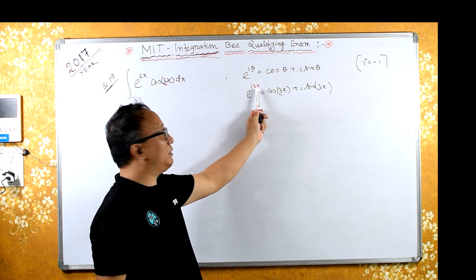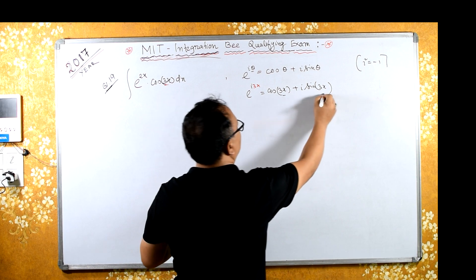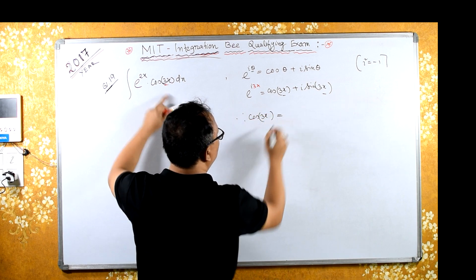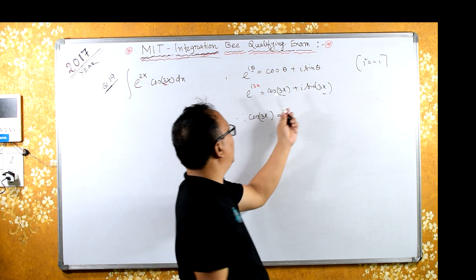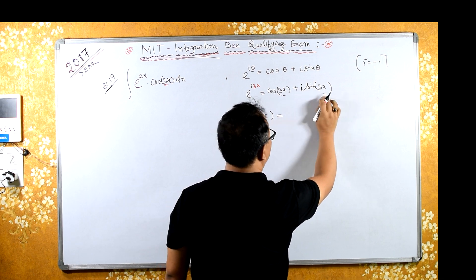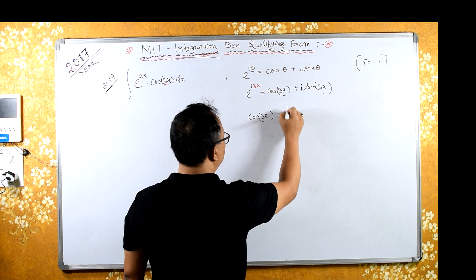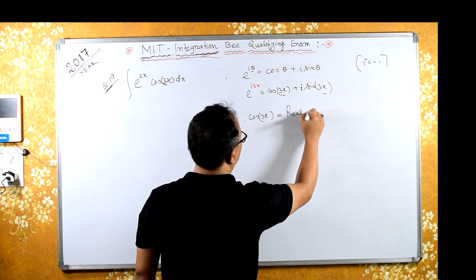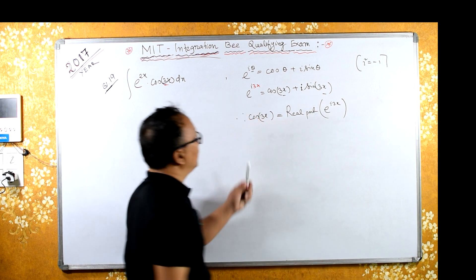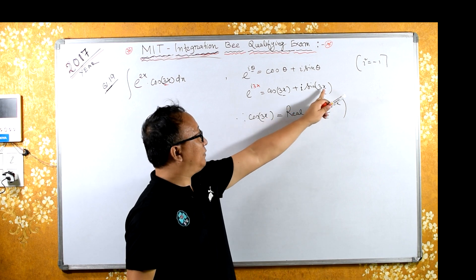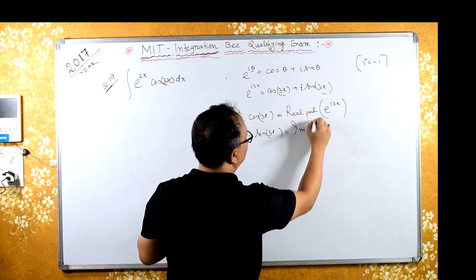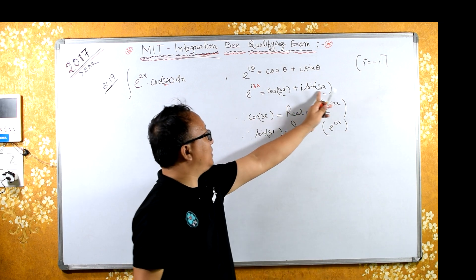From here, substituting 3x for theta, wherever theta appears I write 3x. Now, cos(3x) is the real part — real part means it is free from i — and imaginary part means those terms which are associated with i.